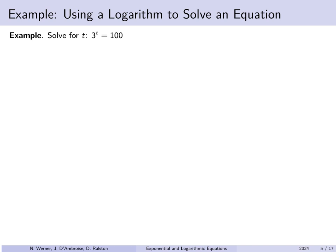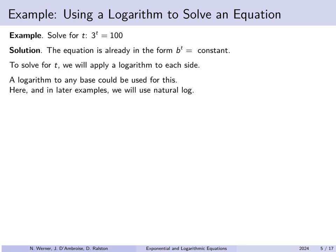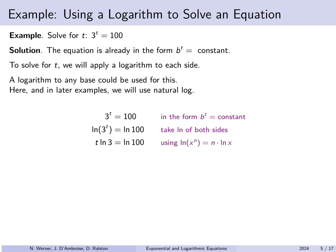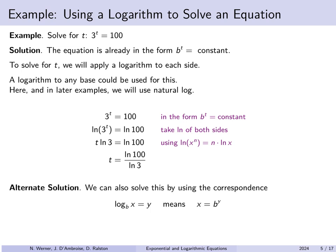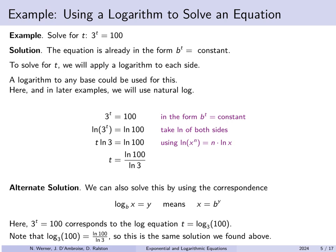Solve for t: 3^t = 100. We have a base to a power equal to a constant, so we convert it to a logarithm by taking the natural log of both sides. On the left, ln(3^t) = t·ln(3). Since ln(3) and ln(100) are just numbers, we divide both sides by ln(3) and we're done. Alternatively, we can convert directly: t = log base 3 of 100. By the change of base formula, log₃(100) = ln(100)/ln(3). This is the same solution.